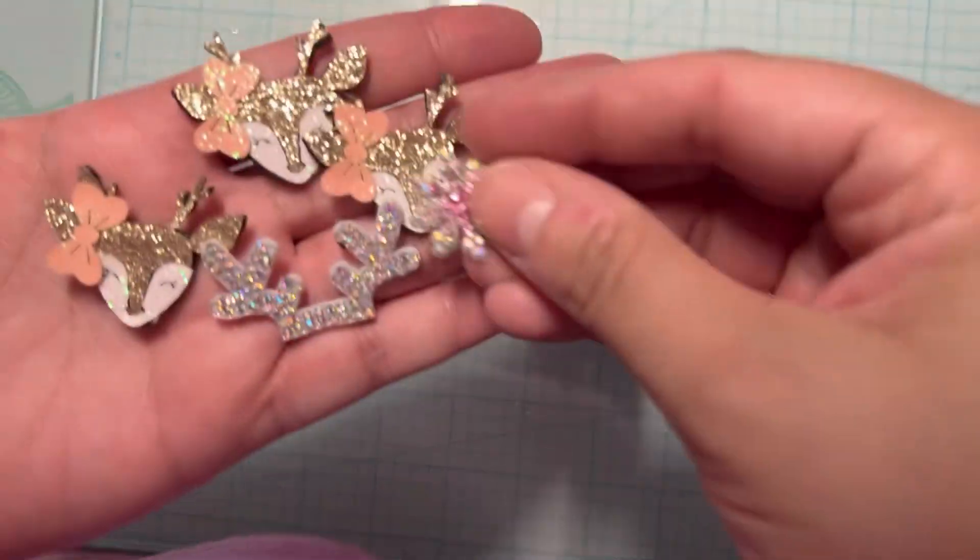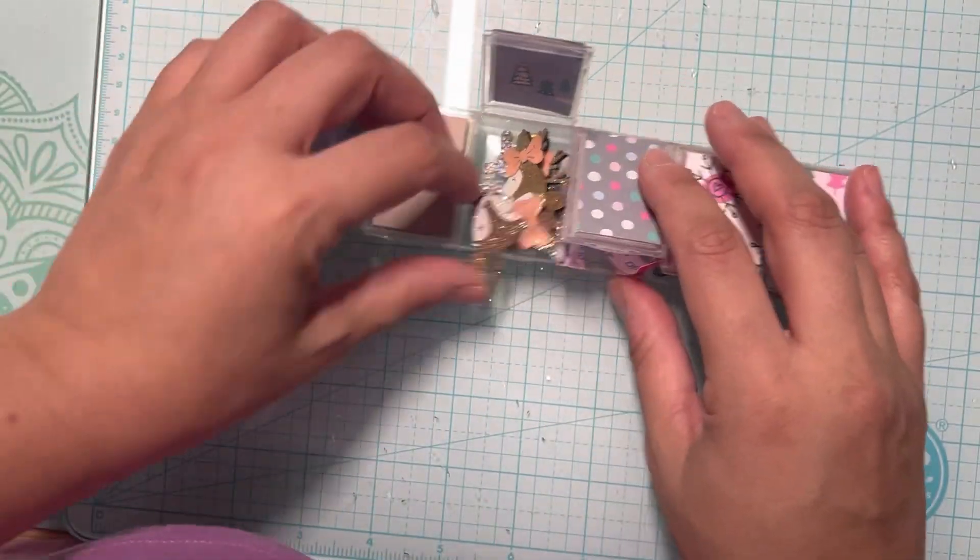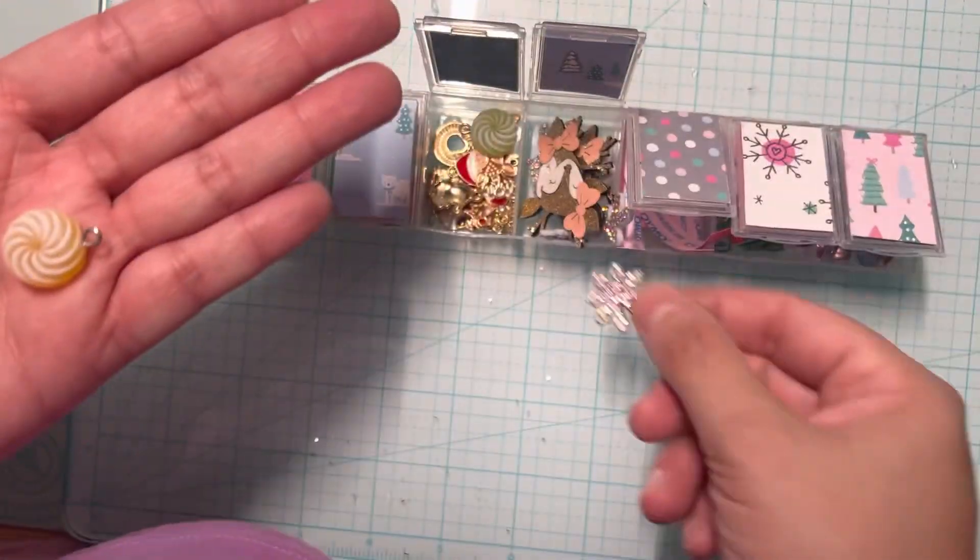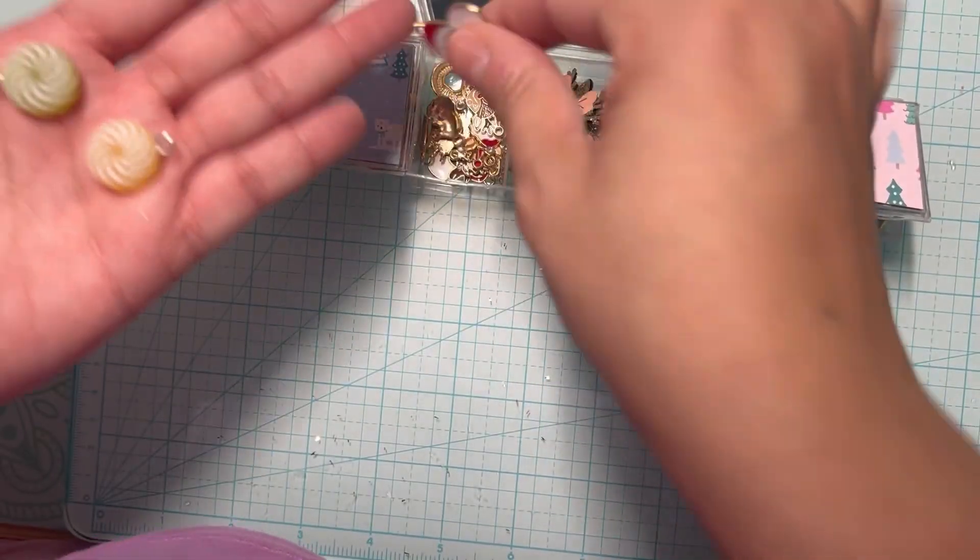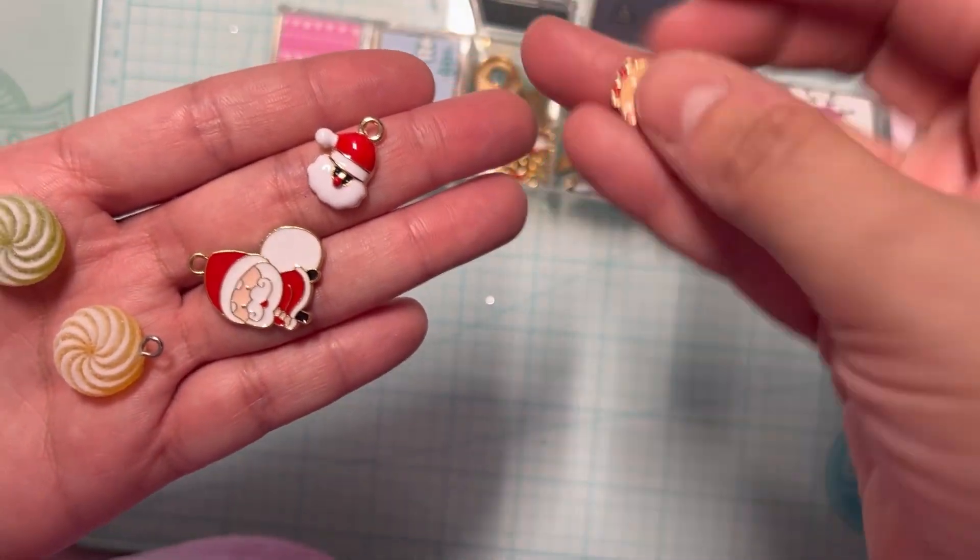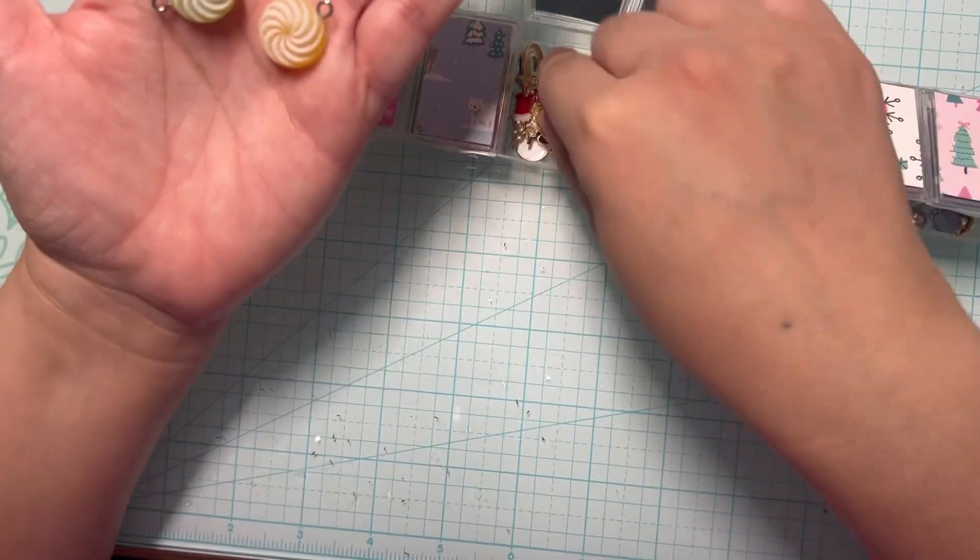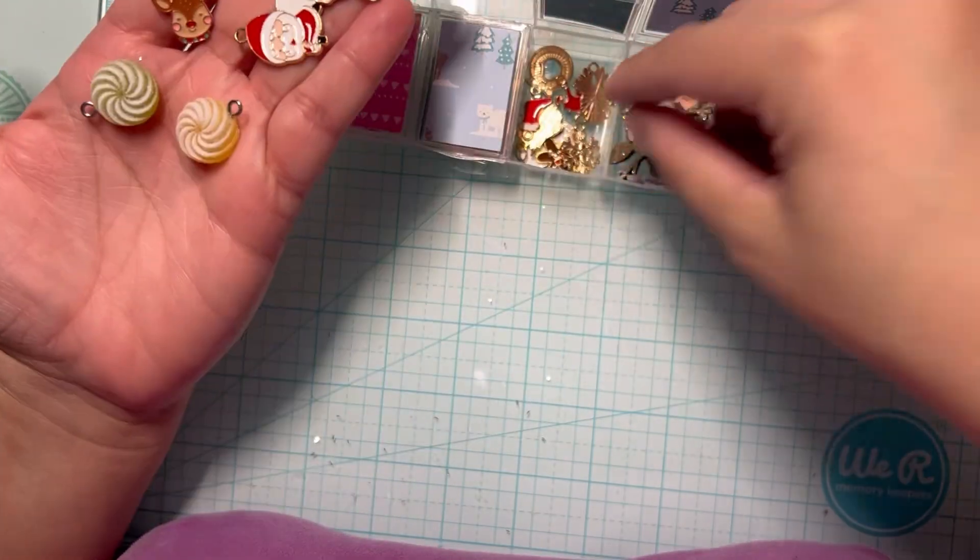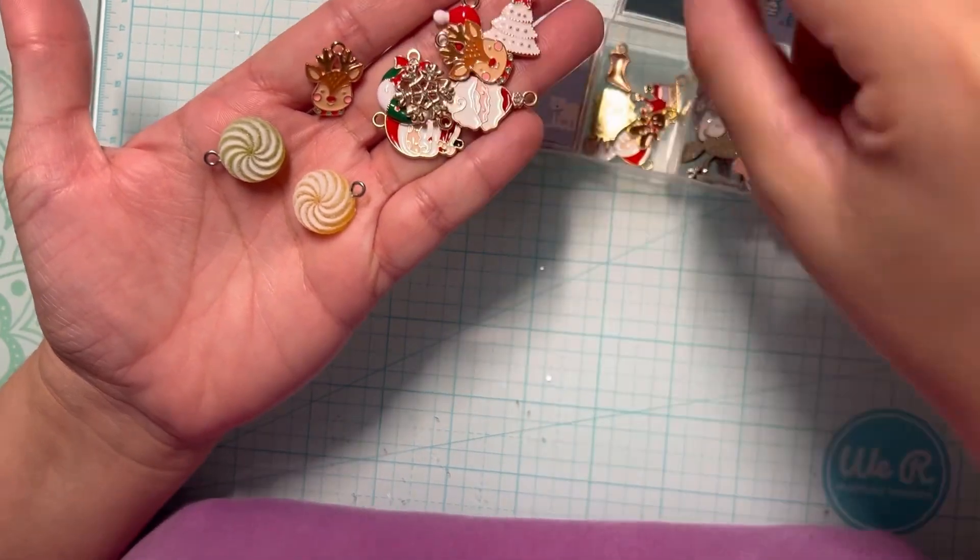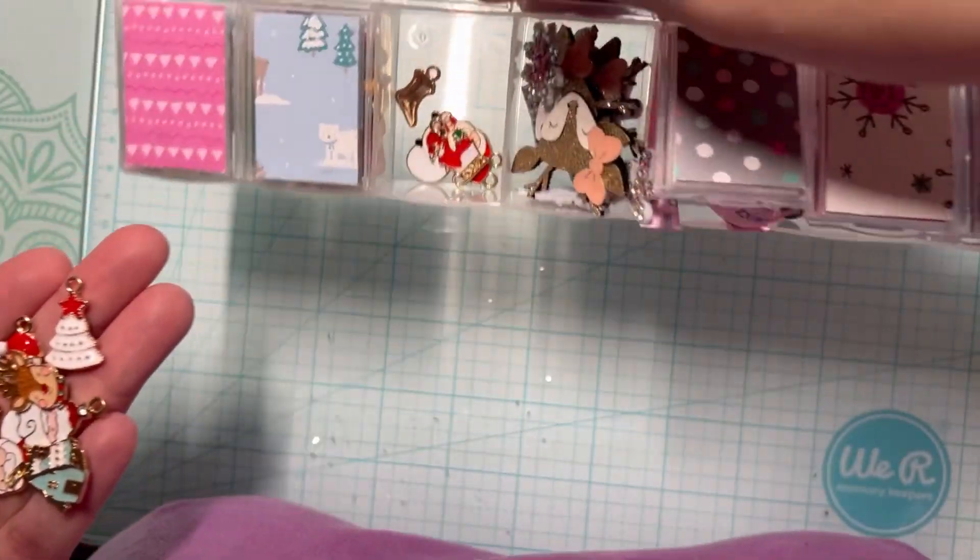And on this one we have some charms. We have some candy charms, Santa Claus, another Santa Claus, reindeer, Christmas tree, another Santa Claus, some stockings, wreath, reindeers, snowflakes, gingerbread. And yeah, that's what's in that compartment.